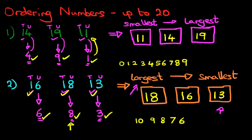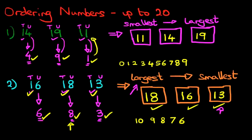So we have reordered the numbers going from the largest to the smallest: 18, 16, 13. That is how we reordered them, and that is the best way to order numbers up to 20. Break down the number first into tens and units. If you can work out which is the largest and the smallest just by looking at the tens, great. If you cannot, then you have to look at the units.